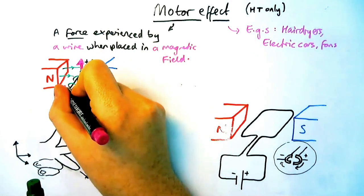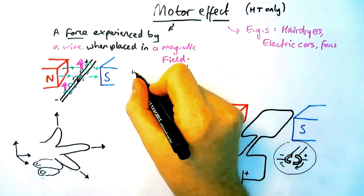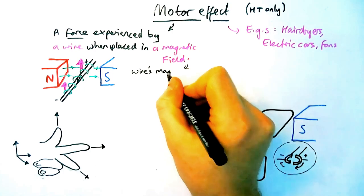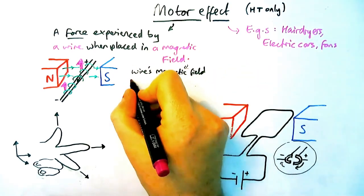So when that happens the wire will jump. It will jump in this case upwards but let's get a definition down for why that happens. This is because the two magnetic fields interact or cross over with each other which causes some motion.